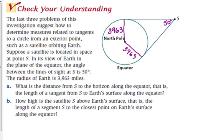Answering the questions. What is the distance from S to the horizon along the equator? That is the length of a tangent from S to Earth's surface along the equator. So this is what it's asking us for. What's the length of this line right here? Well, if it's tangent, where can we put the right angle? Let me label some points here. Let me label point A, B. Where can we draw a right angle? At A and at B, because those are tangent lines. They told us those are tangent lines so we can put a right angle.